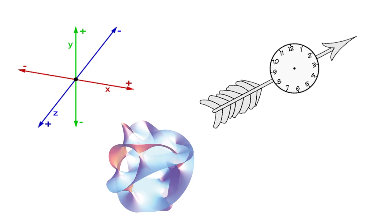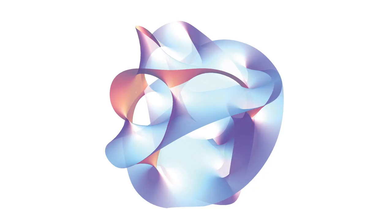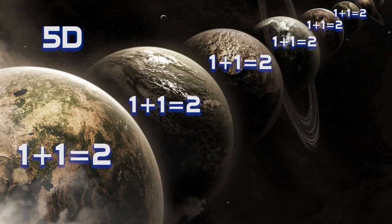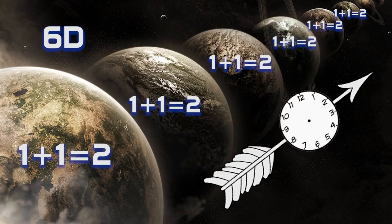According to the string theory, these six additional dimensions would have very interesting properties. If we count the fourth dimension being the time, then the fifth dimension would allow us to travel through all the parallel universes that had the same initial coordinates as ours. The sixth one would allow us to travel in time in any of those universes.